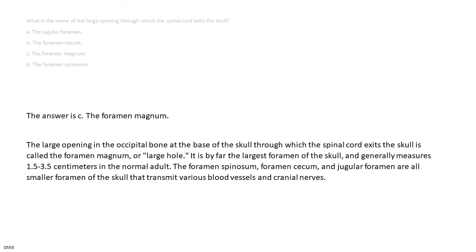The answer is C, the foramen magnum. The large opening in the occipital bone at the base of the skull through which the spinal cord exits the skull is called the foramen magnum, or large hole. It is by far the largest foramen of the skull and generally measures 1.5 to 3.5 cm in the normal adult. The foramen spinosum, foramen cecum, and jugular foramen are all smaller foramina of the skull that transmit various blood vessels and cranial nerves.